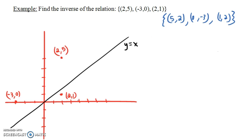Well, over here is (2,5). (5,2) is going to be over here. And (0,-3) is going to be down here. And (1,2) is going to be right here.